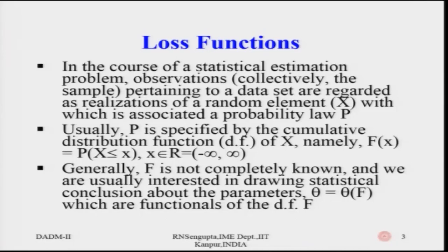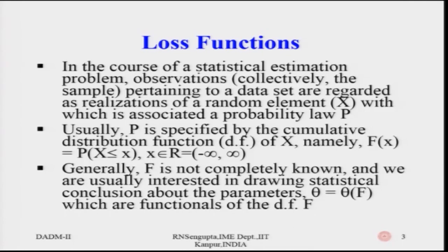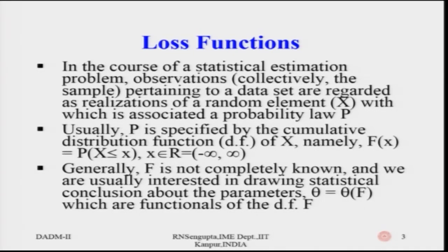Usually P is specified by the cumulative distribution function F(x), which is the summation of all probabilities from the minimum value of x up to that particular value of x. Generally f is not completely known because there are parameters in the distribution. We denote the shape, scale, and location parameters by alpha, beta, and gamma for the population. When you pick up a sample you may not know them — estimating them is the general task.